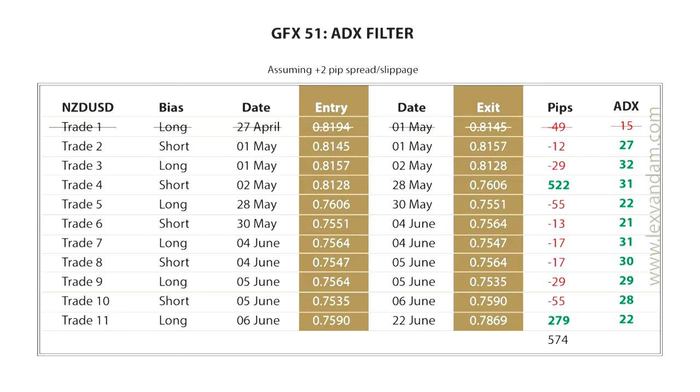If we had added this filter on the basis that no trade should take place when the ADX is lower than 20, then we could have filtered out the first trade, which was one of the losing trades. This is not really an amazing result, because there were not many ranging periods in our example, but still worth 49 pips. There is of course no point in pursuing a trend-following strategy, such as a moving average crossover, when there is no trend. What adding the ADX aims to do is help us avoid following false trading signals.